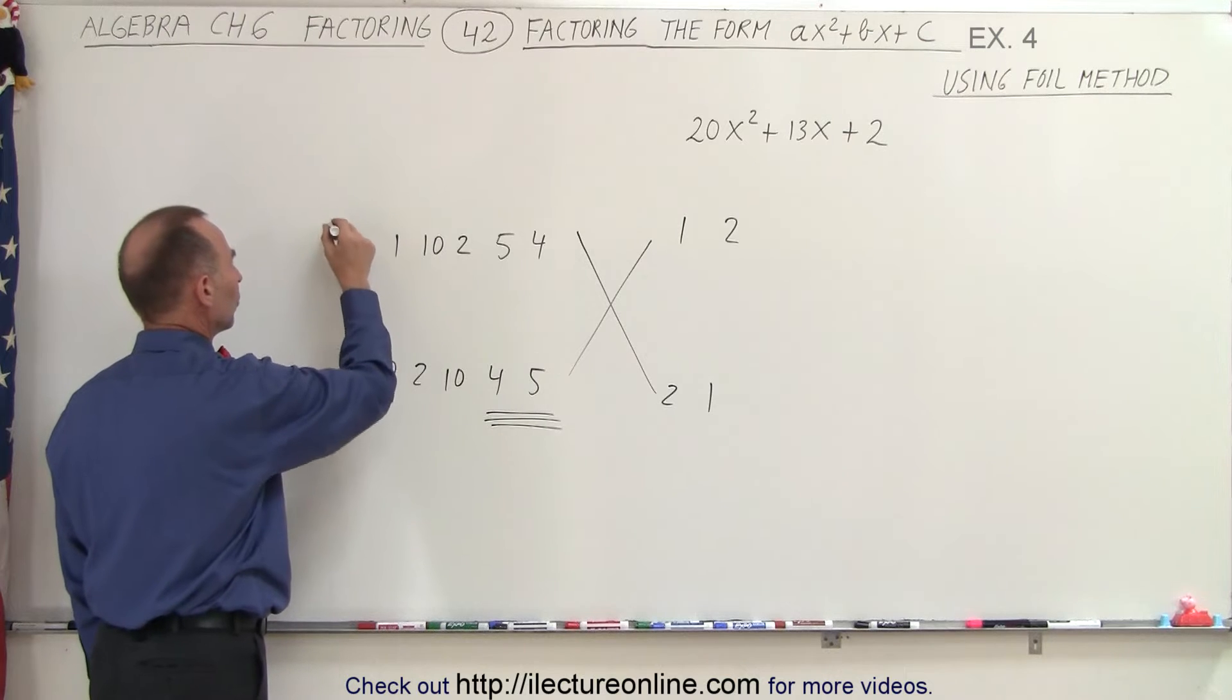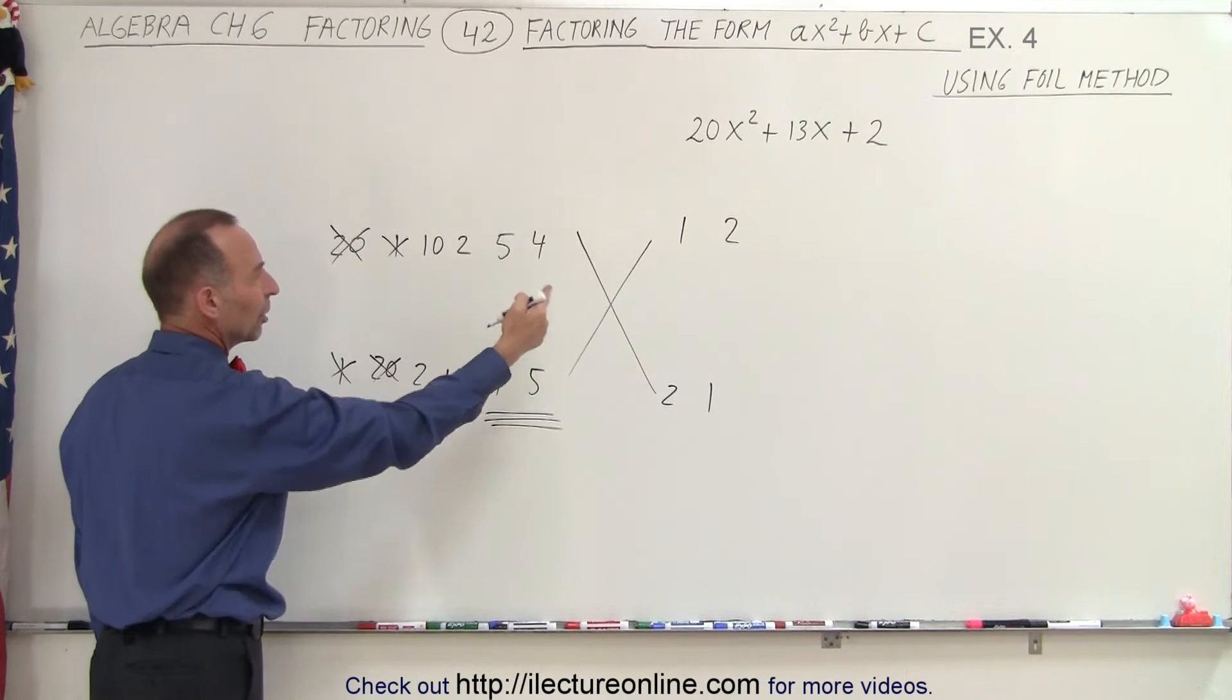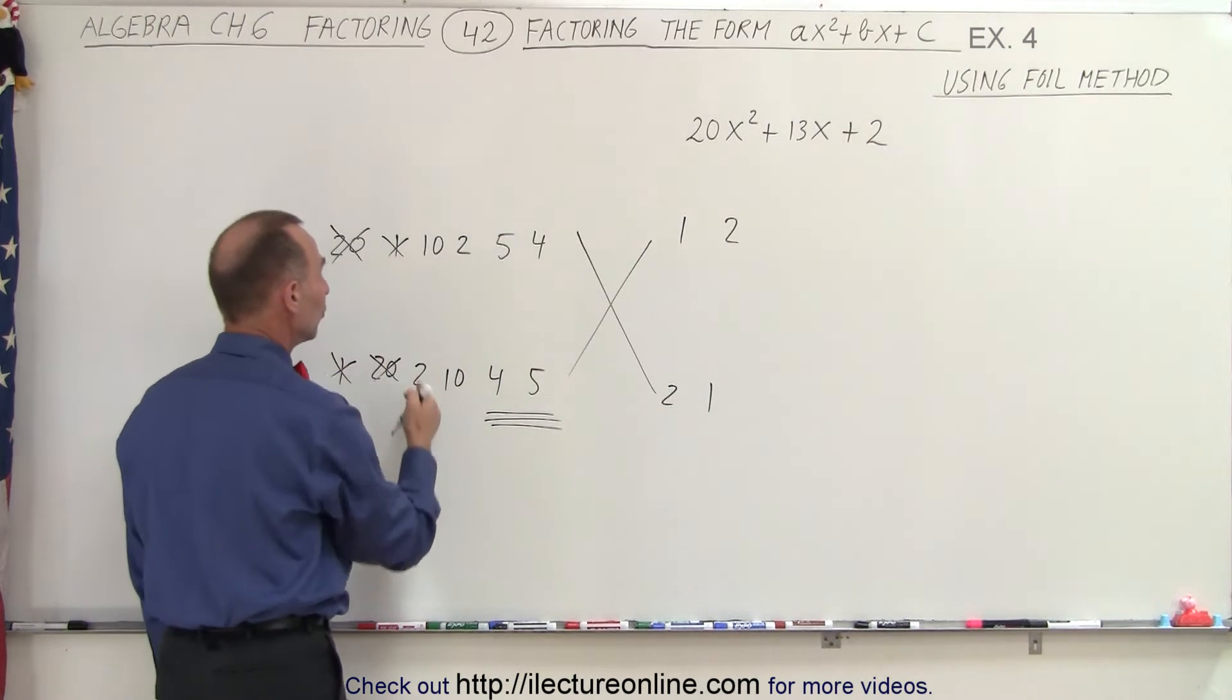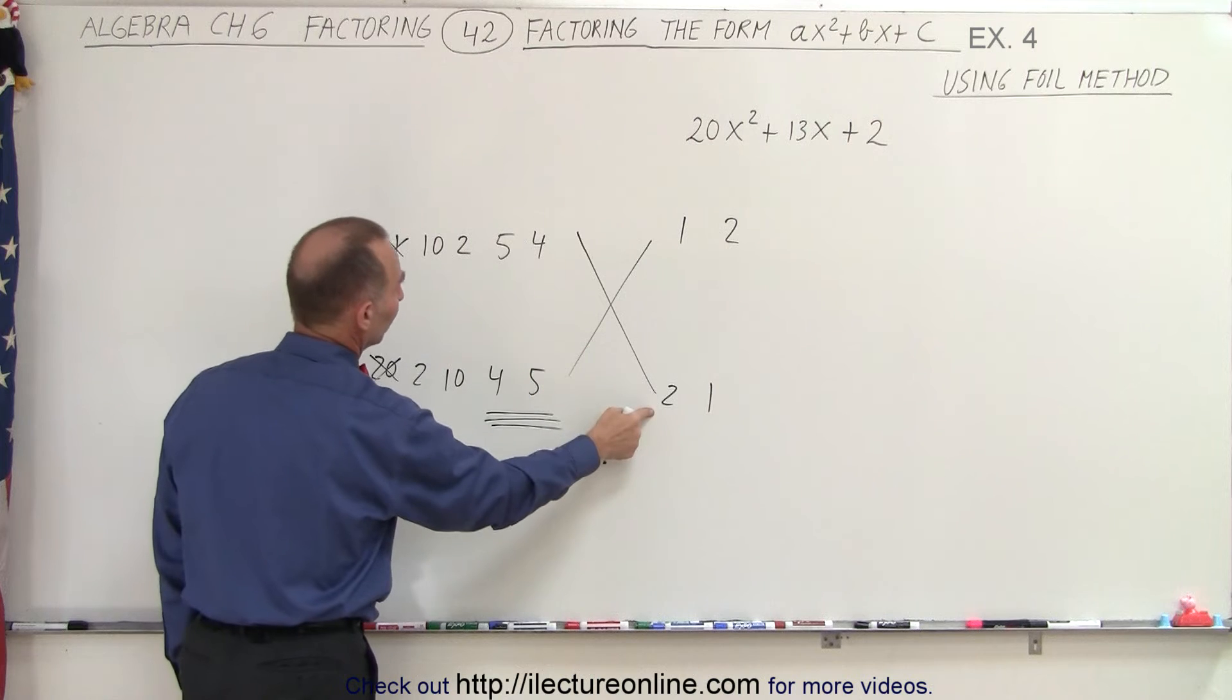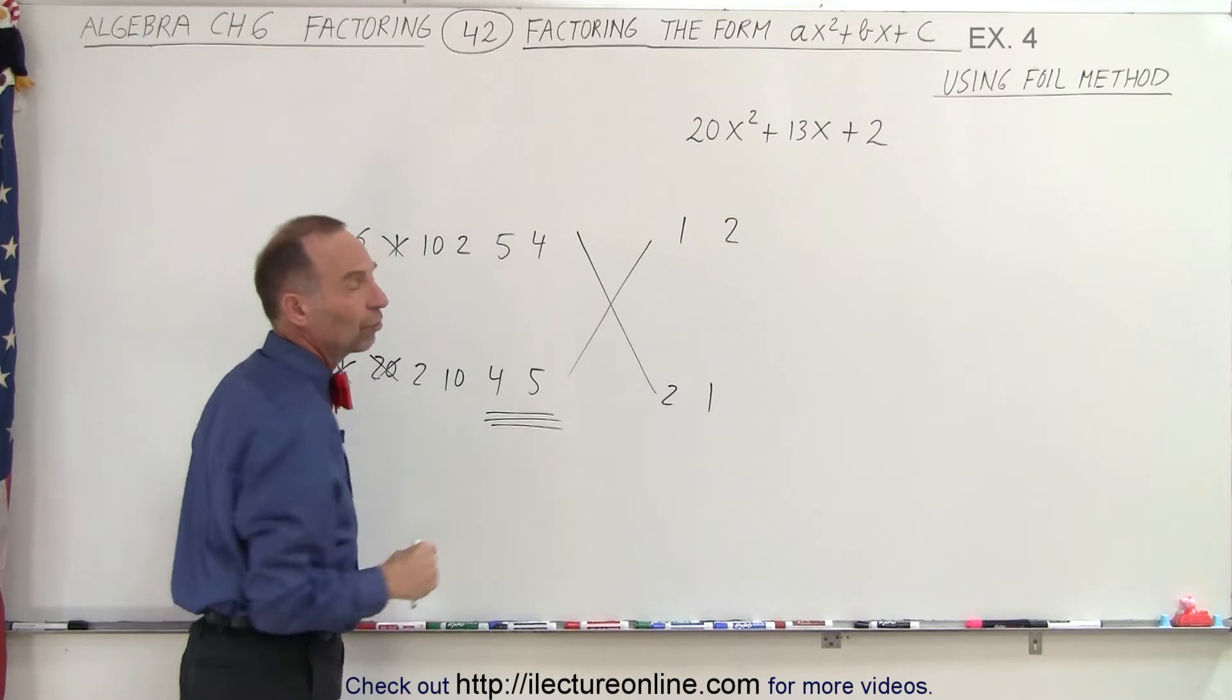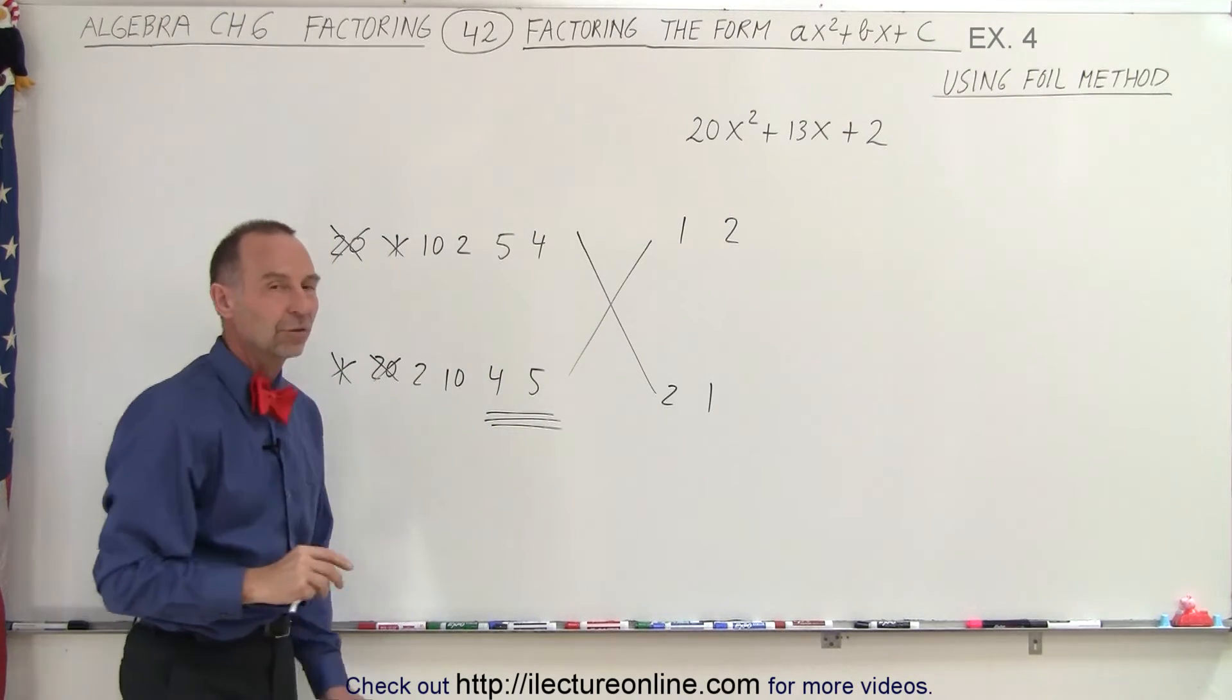20 and 1 I don't think I'm going to need those because whenever I multiply the number 20 by even the number 1, I already have something that's bigger than 13. Same with 10 and 2. 10 times 2 is not very likely. 10 times 2 again gives me a number that's too big. So it's probably going to be one of these combinations right here.